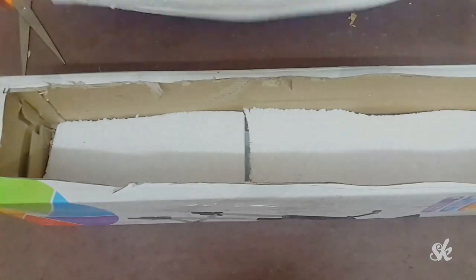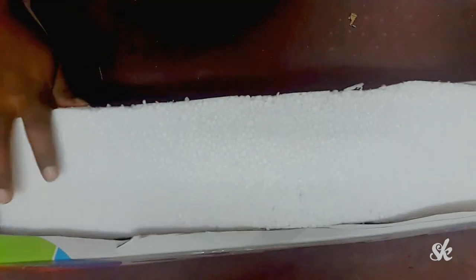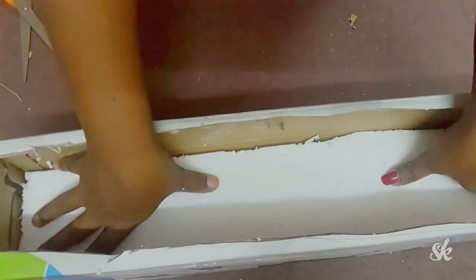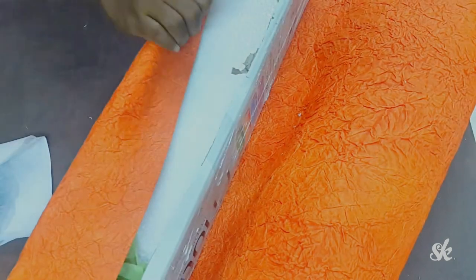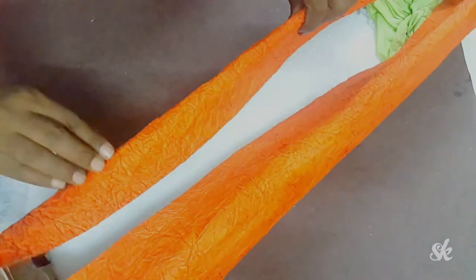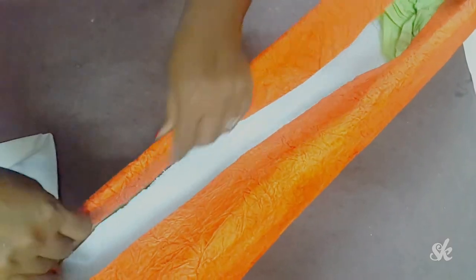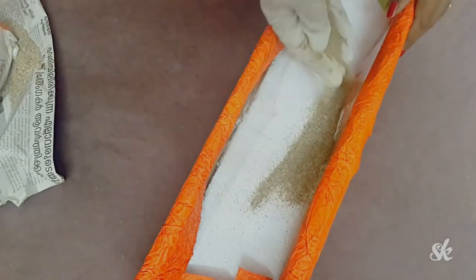Here I have used two layers of thermocol and I think that's enough. Now cover the box with a colorful chart paper. And fill up the box with some soil.